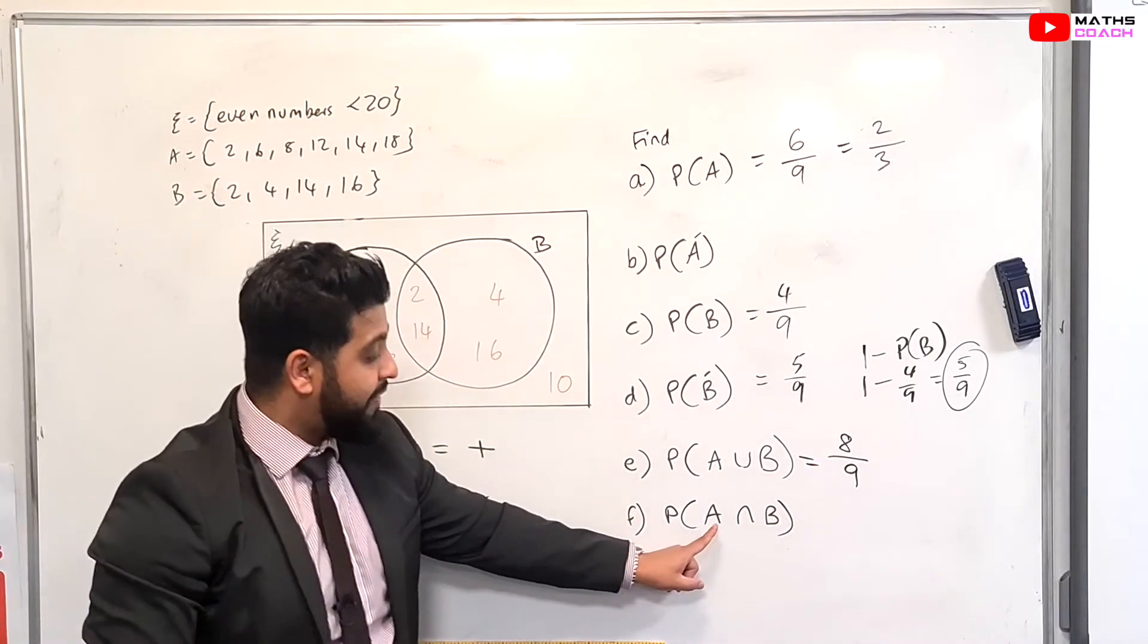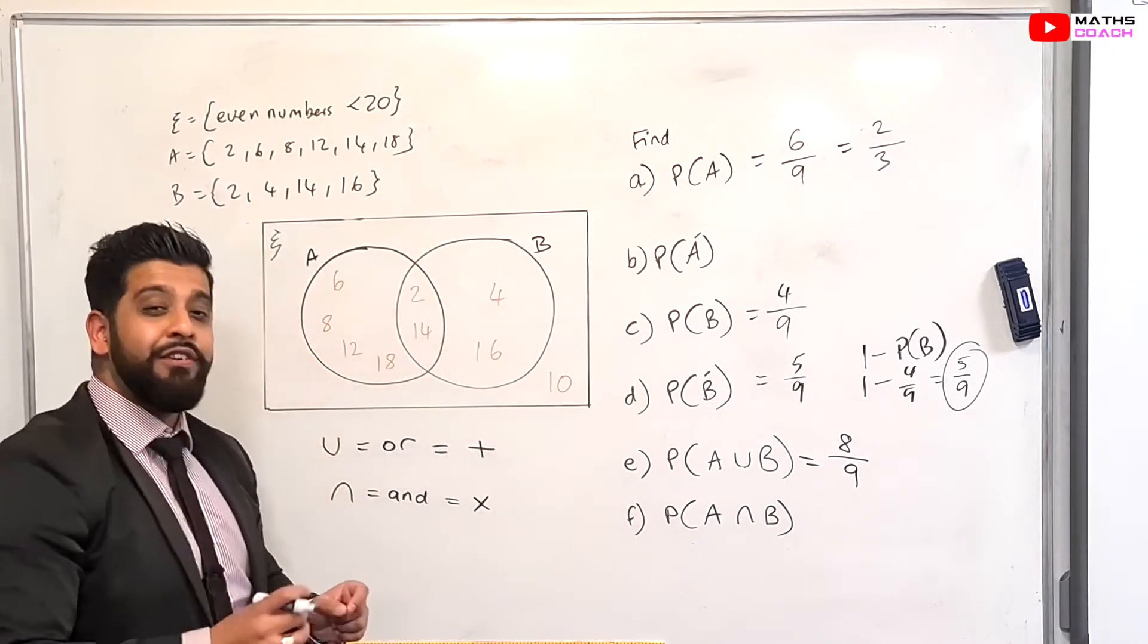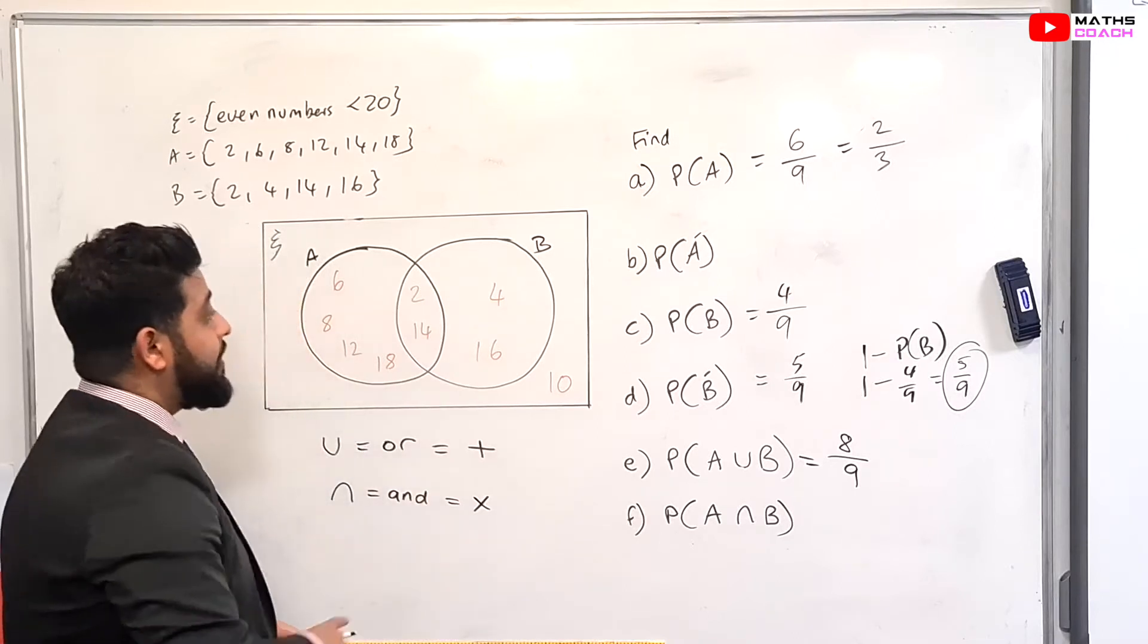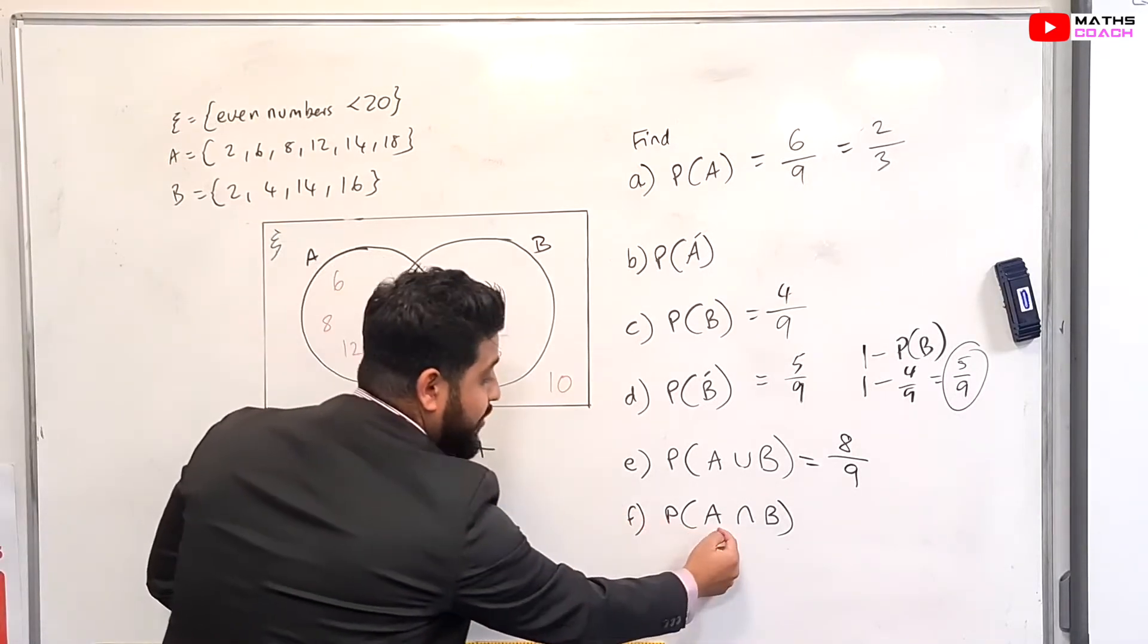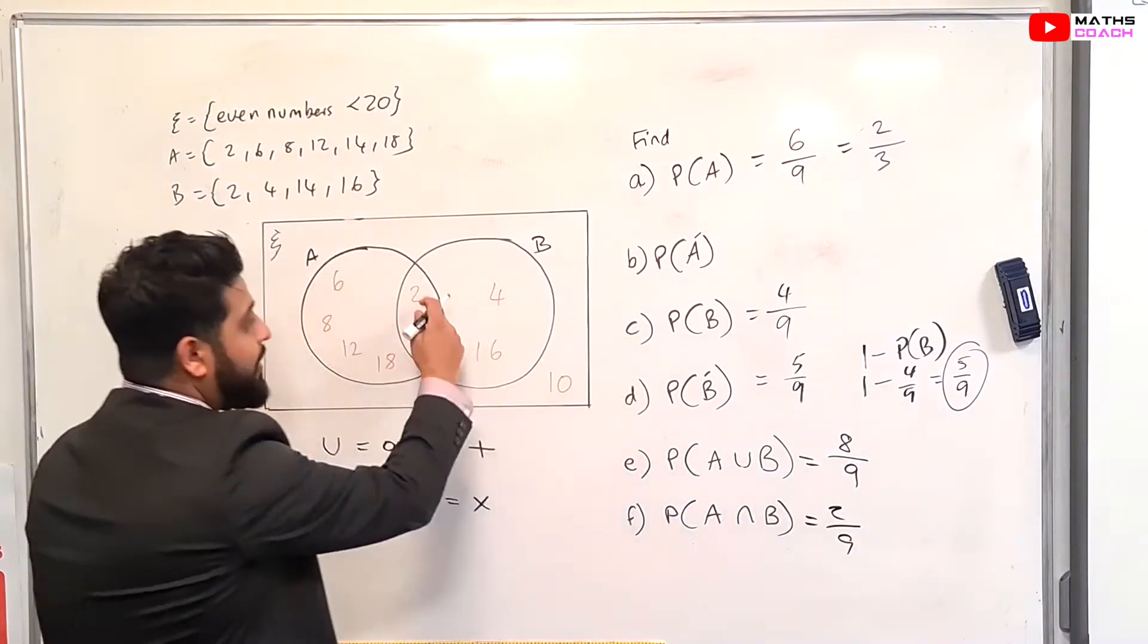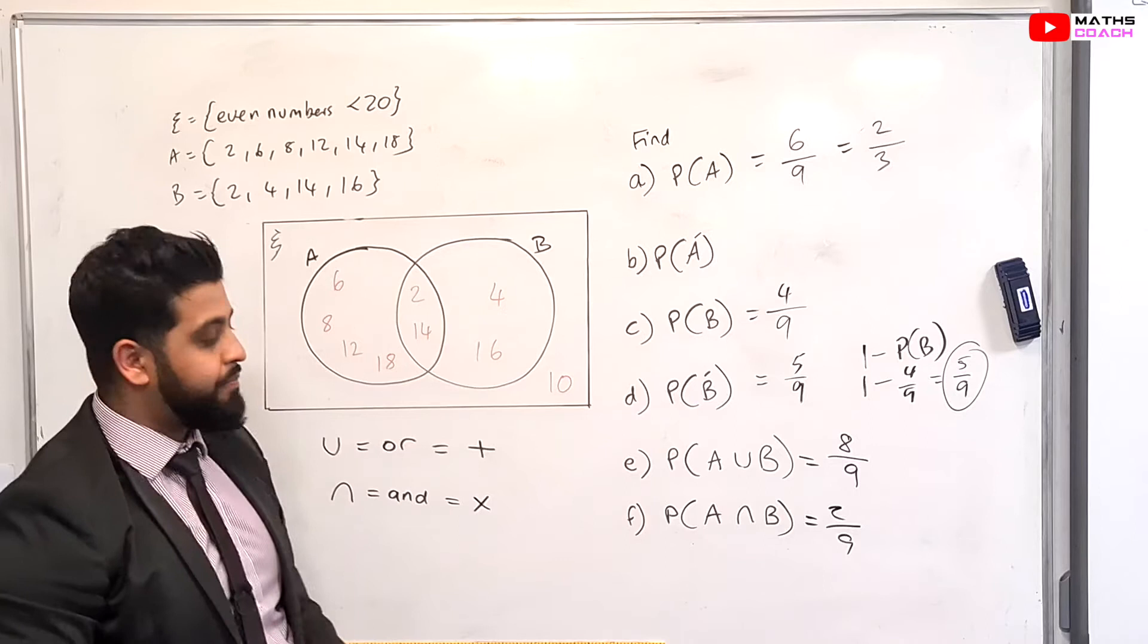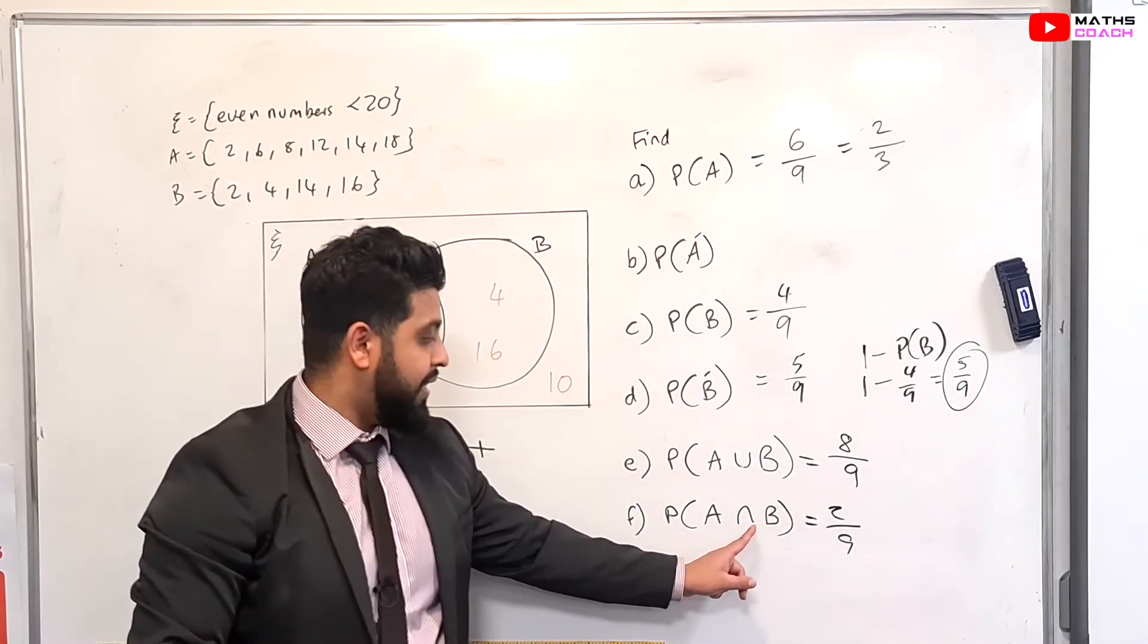Right, moving on to this one. Probability of event A and B happening. When does event A and B happen at the same time? You know, it's this part of the intersection that represents probability of event A and B happening. These two numbers, so 2 out of 9, these two numbers represent when A and B are happening. So 2 out of 9 is our probability for A and B.